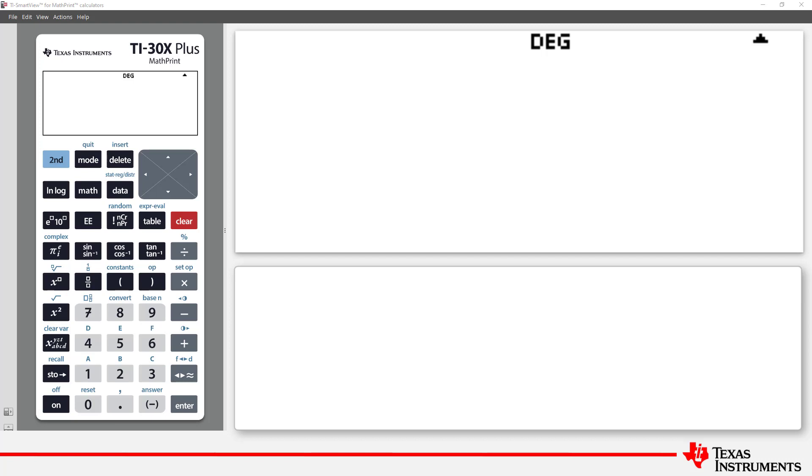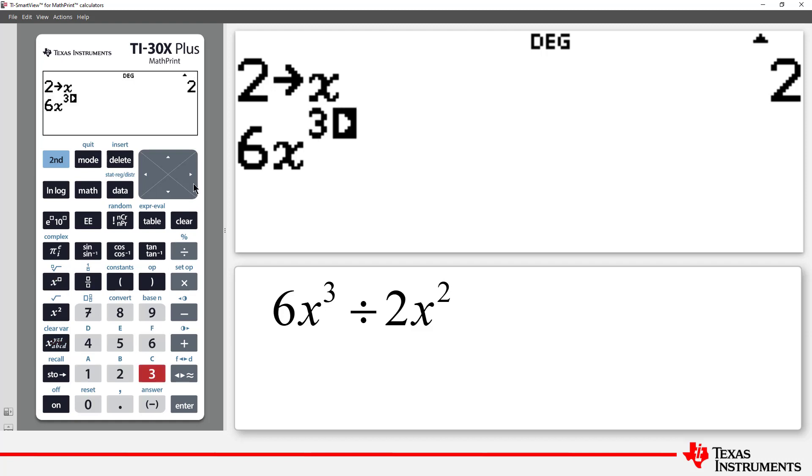Let's start with a simple example: 6x cubed divided by 2x squared. The TI-30X Plus MathPrint calculator is not algebraic, so it can't simplify this expression, but we can substitute numbers and explore. We'll start by storing 2 in x. Now enter the expression 6x cubed divided by 2x squared.